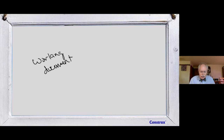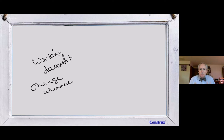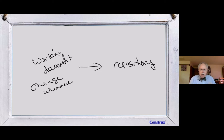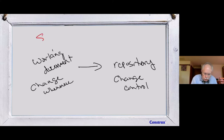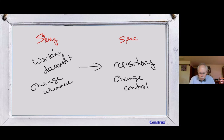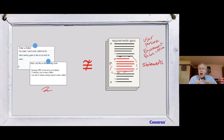Knowing the user story is not a spec is liberating. I can treat it as a working document — something I can use and change whenever I want. At some point I put it into a repository where change control happens, if needed — like medical device companies that must maintain a requirements repository. But the story itself is a lightweight working document, not the formal spec.